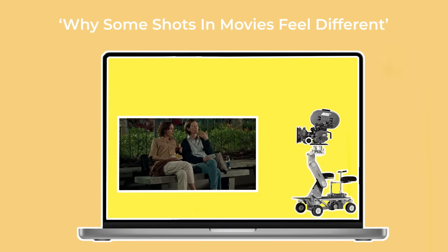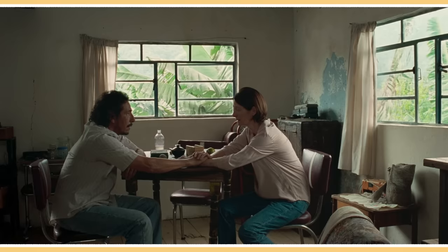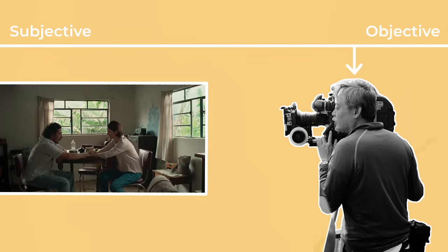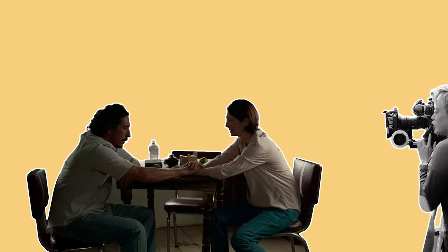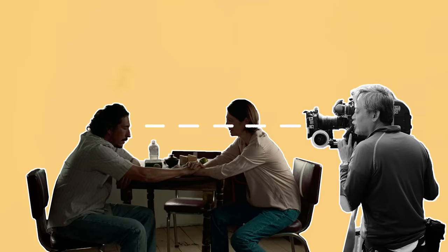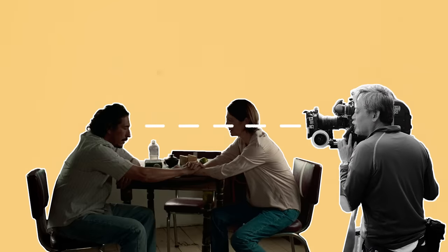Wider shots like long shots or medium shots place the characters a bit further from the camera and therefore feel a bit more objective, like the camera is observing their actions from a healthy distance away. Positioning the camera so that it sits around the same height as the characters and filming at a neutral angle without a tilt is another way of imposing a feeling of objectivity.